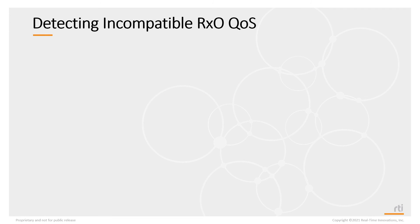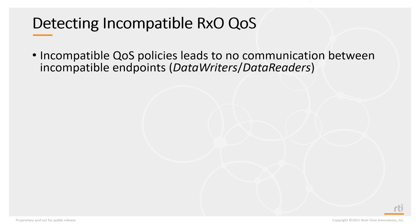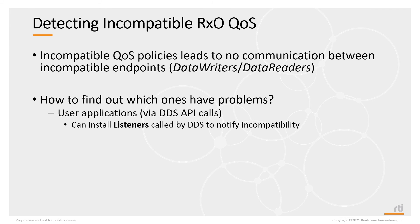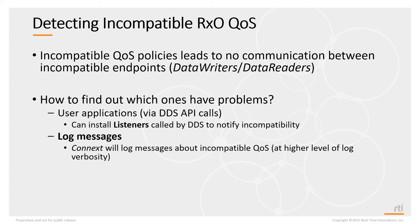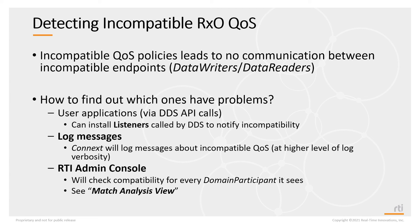How do you detect incompatible QoS settings in a system? When you have incompatible QoS settings, the data readers and data writers will not be able to communicate. You can install listeners using the DDS API, and these listeners will be called back by DDS when it determines that a data reader and data writer have incompatible QoS. You can also look at log messages — DDS will output log messages when it detects incompatible QoS. There are also external tools: you can start up RTI Admin Console and in the match analysis view, it'll show you when it finds incompatible QoS.